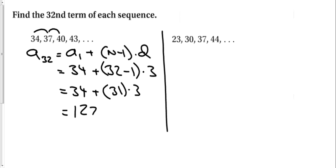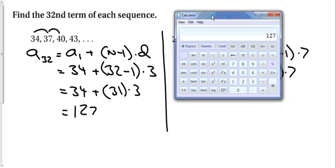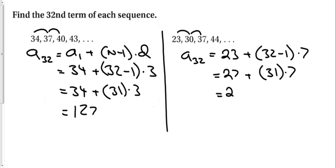Same thing for the next problem. The 32nd term is going to equal 23, which is the first term, plus (32 minus 1) times the common difference of 7. That gives us 23 plus 31 times 7. Using the calculator, 31 times 7 is 217, plus 23 gives a total of 240.